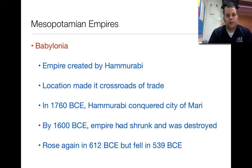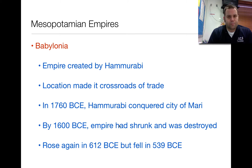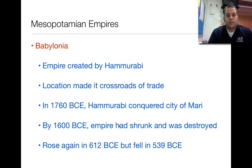For Babylonia, or Babylon, it was an empire created by someone named Hammurabi. We'll discuss more about Hammurabi because he was a very important figure in history. The location of Babylonia was great because it was right in the middle of everything — it was considered a crossroads of trade. Everybody had to come through or leave through Babylon because all major roads went through it. In 1760 BCE, Hammurabi conquered the city of Mari, and this is kind of where Babylonia and his conquests of the area begin.